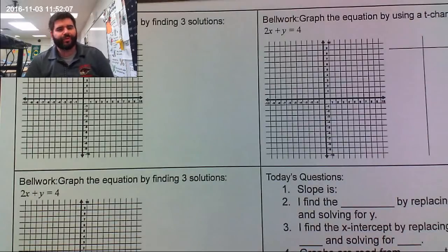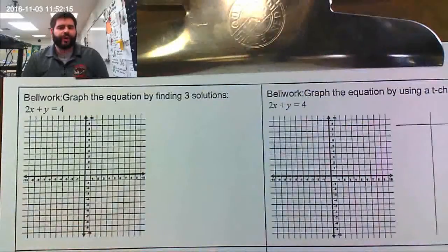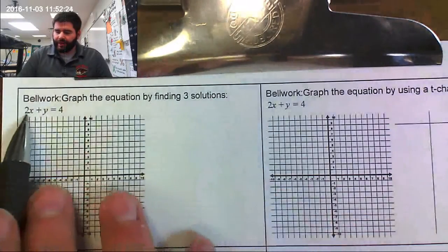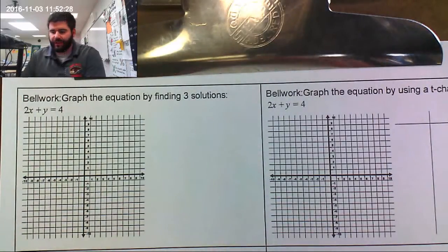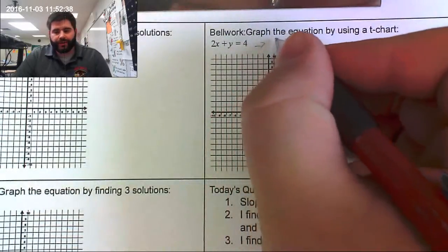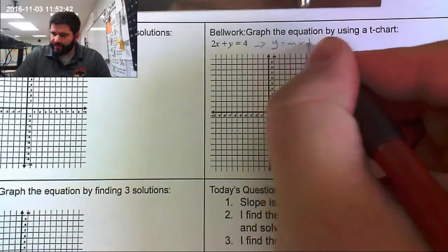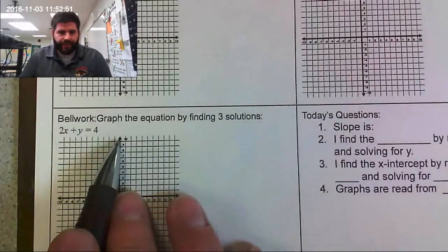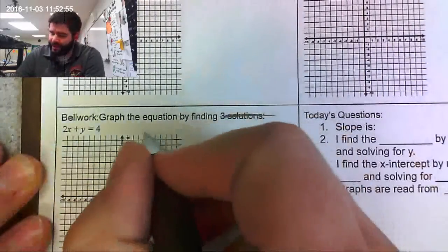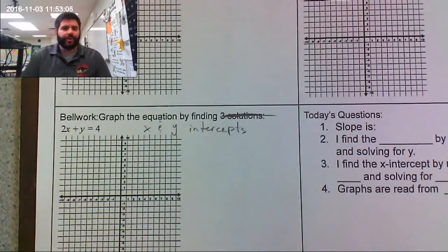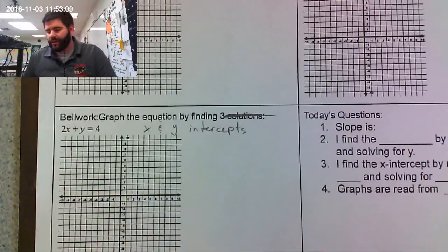Hey everybody, welcome back to Mr. Anderson's Algebra 1 lessons. Today we're going to talk about graphing linear equations and we are going to graph them three different ways. The first way is by finding three ordered pairs. The second way we're going to do a t-chart, turning the equation into slope-intercept form, y equals mx plus b. The third way is finding the x and y intercepts. We're going to rapid fire them so you can get quick knowledge ready for that quiz.